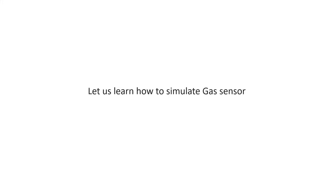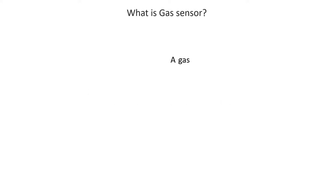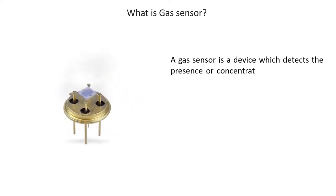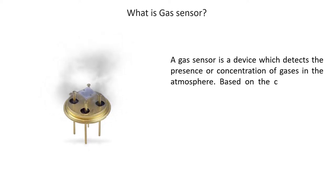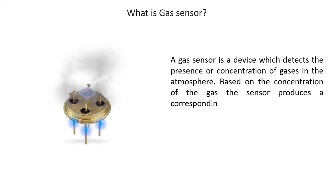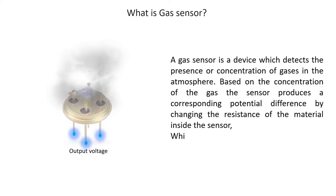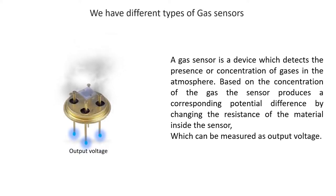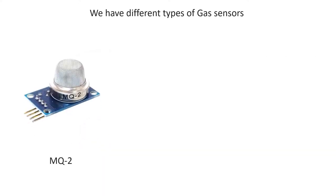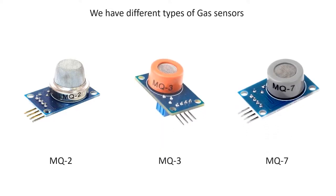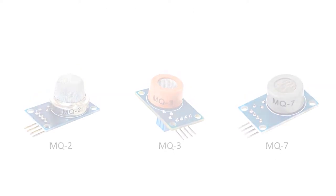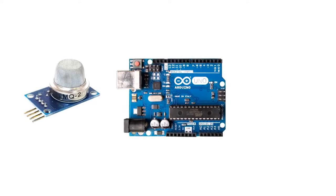Let us learn how to simulate a gas sensor with Arduino Uno. A gas sensor is a device which detects the presence or concentration of gases in the atmosphere. Based on the concentration of gas, the sensor produces a corresponding potential difference by changing the resistance of the material inside the sensor, which can be measured as output voltage. There are different types: MQ2 or smoke sensor, MQ3 or alcohol sensor, MQ7 and many more. Components needed: gas sensor, Arduino Uno and resistors.